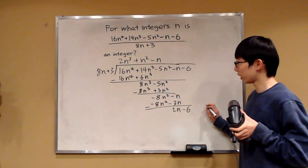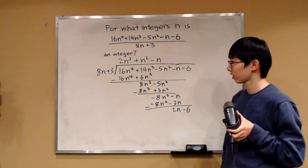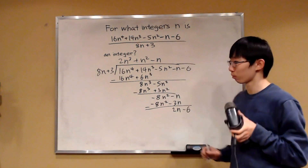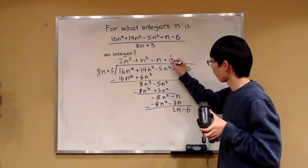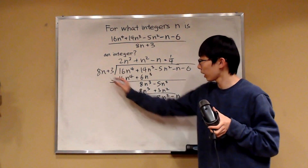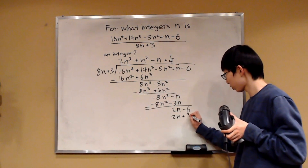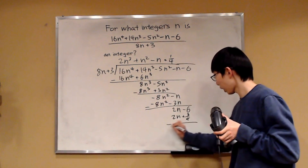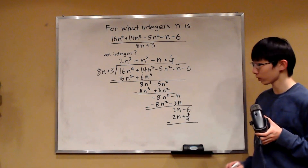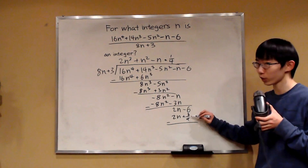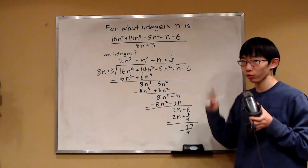Finally, we need to make this 2n disappear when we do the subtraction. Our next term is not going to be an integer term — it's actually going to be a fraction term. Our next term will be 1 over 4. When 1 over 4 is multiplied with 8n, that produces 2n. And then 1 over 4 multiplied by 3 is plus 3 over 4. Then we do our subtraction: 2n minus 2n cancels out, and we have negative 6 minus 3 over 4, which is negative 27 over 4. And this is our remainder.